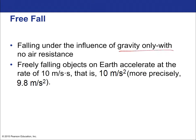Falling under the influence of gravity only, with negligible air resistance, is called free fall. You don't need to be moving downward to be in free fall. If I throw an object up, from the moment it leaves your hand it's falling — it's under the influence of gravity only. It's still moving up for a while because of its initial upward velocity, but it's falling on the way up, at the top of the toss, and on the way down.